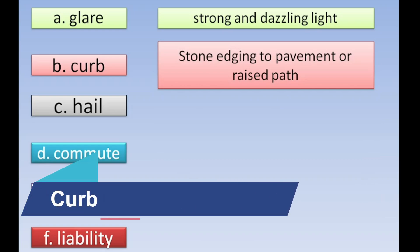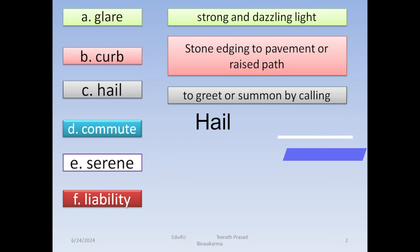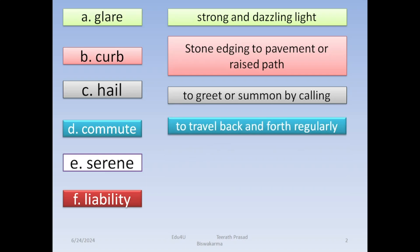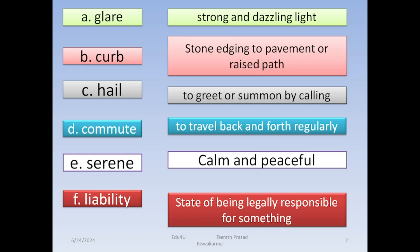Pavement means raised path. The next word is 'hail.' Then 'commute,' which means to travel back and forth regularly. 'Serene' means to be calm and peaceful. 'Legally responsible for something' is another meaning covered. So 'glare' is related to light, 'pavement' to the sidewalk.